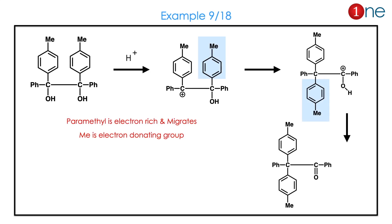Let us look at the next question. The diol has two migrating groups — one is phenyl and the other is tolyl. Which will migrate? The system is symmetrical, so you can protonate anywhere. The tolyl group is electron-rich due to the electron-donating methyl group, so it migrates and ketone formation occurs. Migrating ability is decided by electron richness.